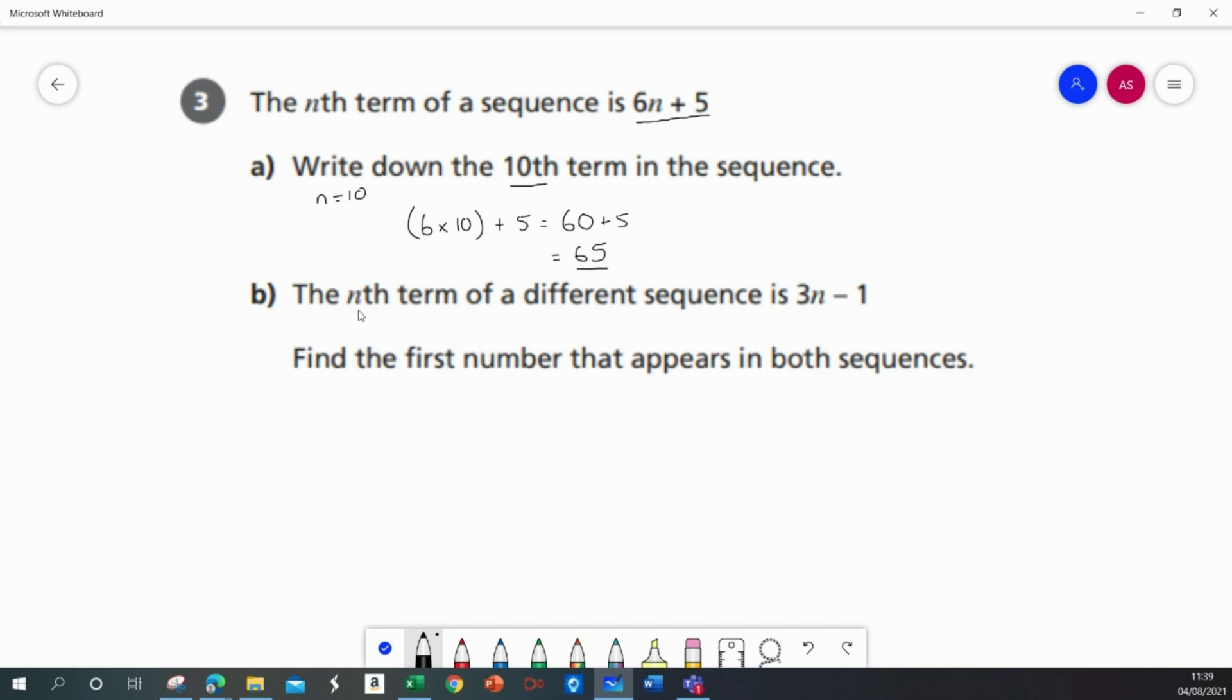For part b, the nth term of a different sequence is 3n minus 1. We have to find the first number that appears in both sequences. Now for this, I'm going to list out the first few terms in both sequences.